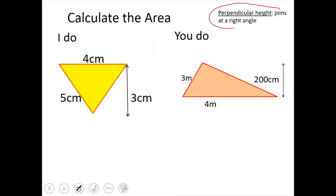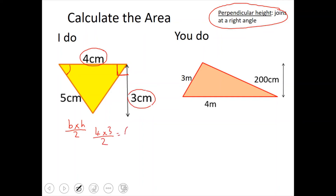These questions are slightly more confusing because we still have to remember the formula: base times height divided by 2. Perpendicular height means where it joins at a right angle. You've got 4 centimeters, 5 centimeters, and 3 centimeters. We need to remember which one joins at 90 degrees. The 5 centimeters doesn't join at 90 degrees, but the 4 centimeters does. So I'm going to use 4 centimeters and 3 centimeters: 4 times 3 divided by 2 equals 6 centimeters squared.